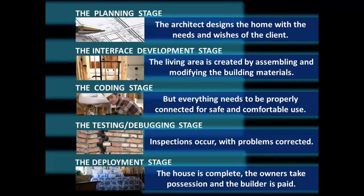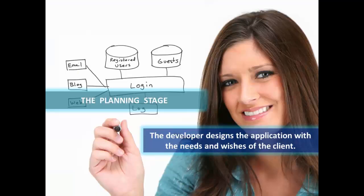So let's look at how software is developed. The planning stage in software development is where the developer, the software engineer, or a team of developers meets with the client and figures out what the application needs to do, what features it needs to have, and what it should look like. That's all part of the planning stage.